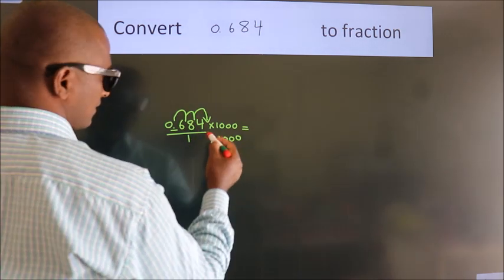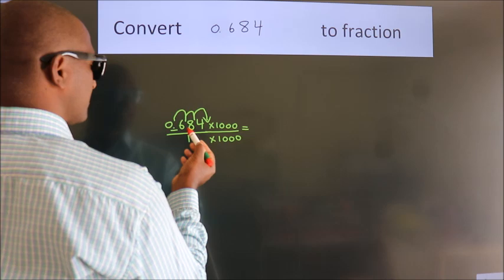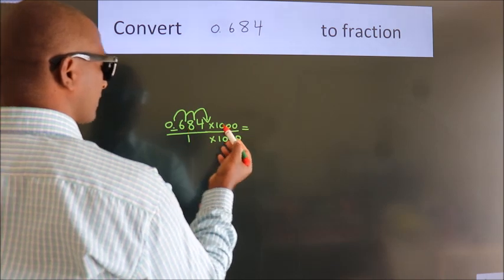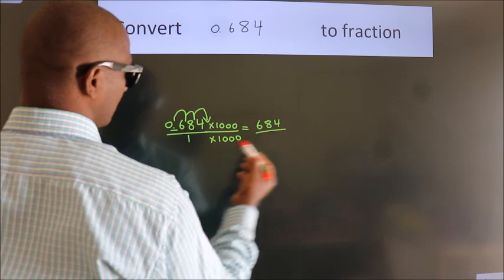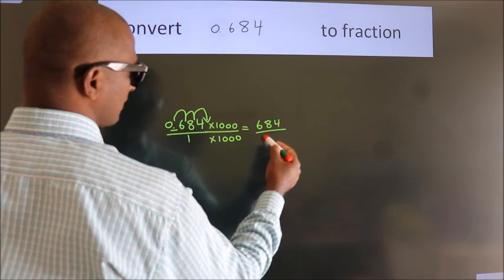Next, 0.684 into 1000, 684. 1 into 1000, 1000.